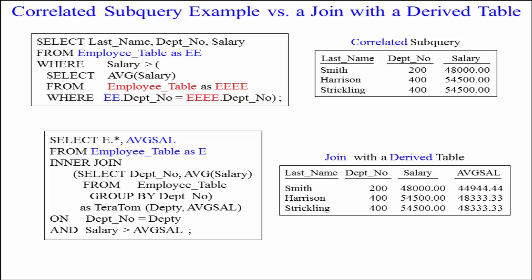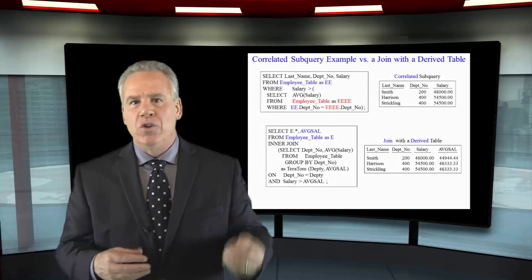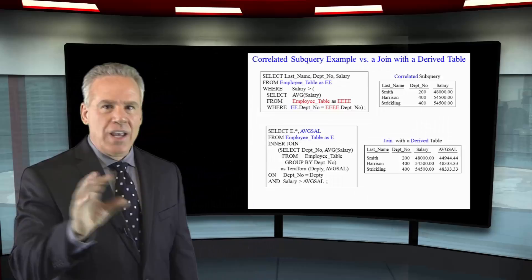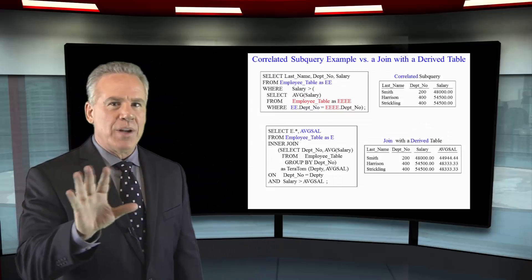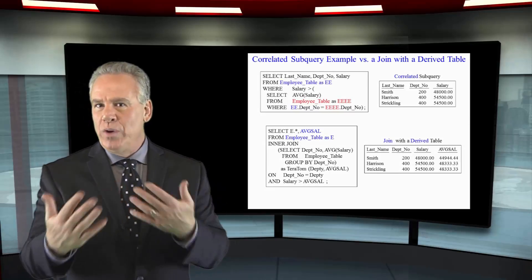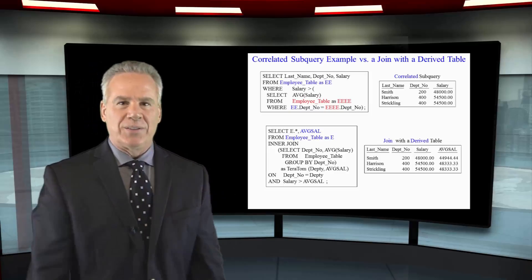Now, I'm going to be joining on Depno equals Deptno and salary greater than average sal. So whether you do it with a correlated subquery or use your derived table syntax, it's not going to matter much anyway. Check the explain plan out and you'll know which one gives you the best performance.